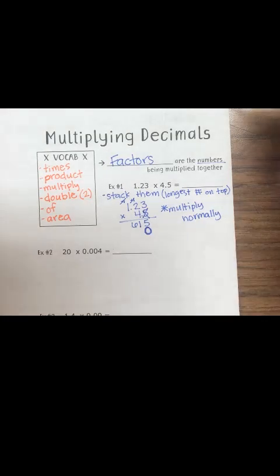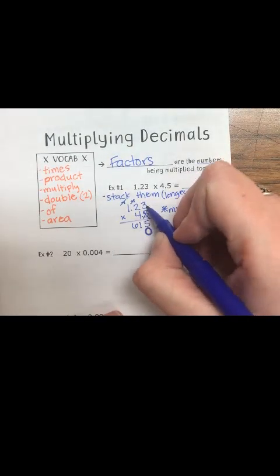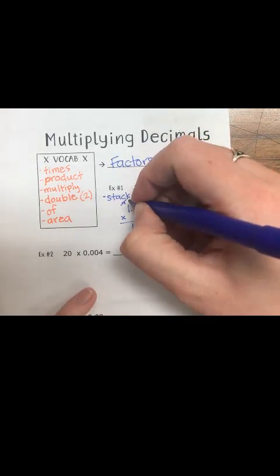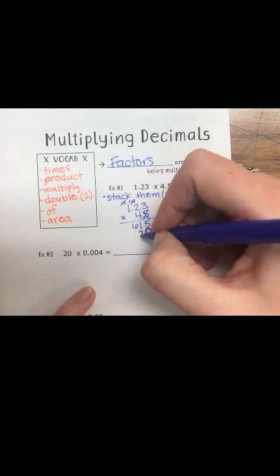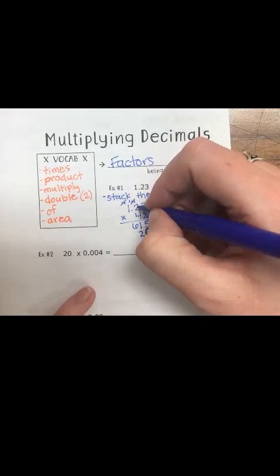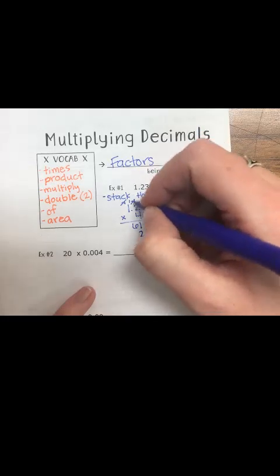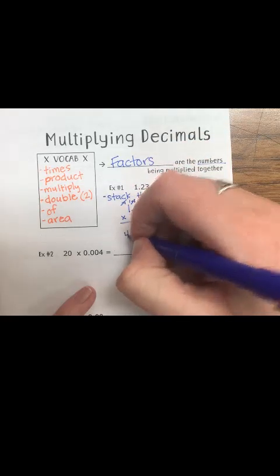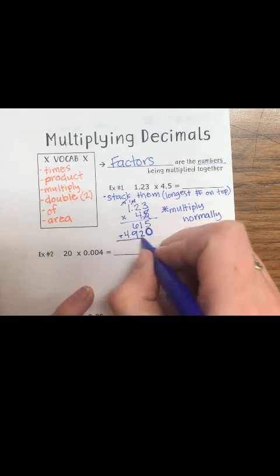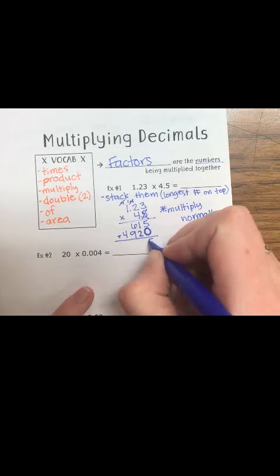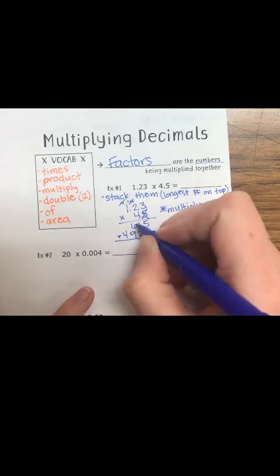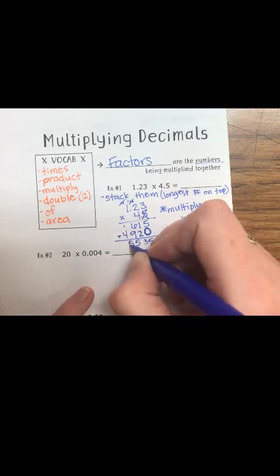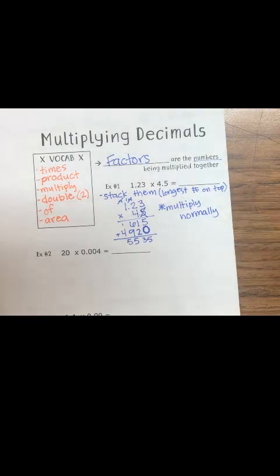Now I do four times three — I start back over with the three. Four times three is 12, carry my one, bring down my two. Four times two is eight plus one is nine, so I bring my nine down. Then four times one is four. Lastly, I add my numbers: five plus zero is five, one plus two is three, nine plus six is fifteen — carry my one, bring down my five — and four plus one is five.